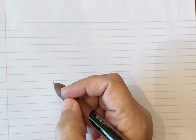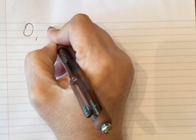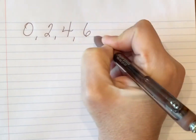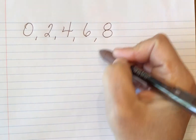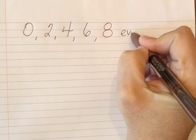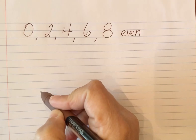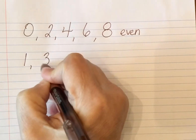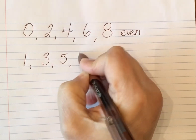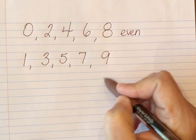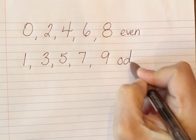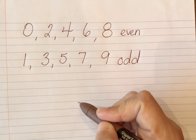Hey guys, we talked last week and you saw a video about even and odd numbers. Just as a review, we know that even numbers have a zero, two, four, six, or eight in the ones place. Odd numbers have a one, three, five, seven, or nine in the ones place.